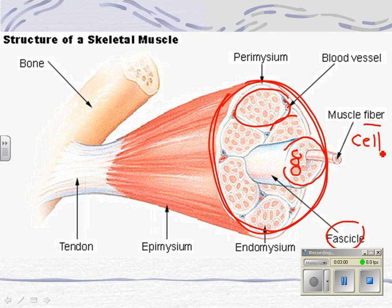Why do your muscles twitch like that? If we knew the answer to that, we could probably give some medicine to solve lots of problems. It has something to do with the nerves — nerve fatigue or something. We don't know why stress causes muscle twitches, for example. Muscle twitches are also a sign of certain kinds of nerve diseases, but usually not.